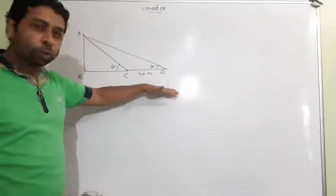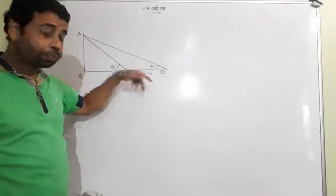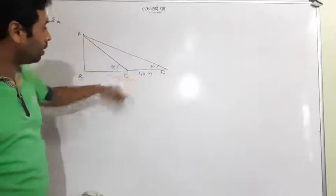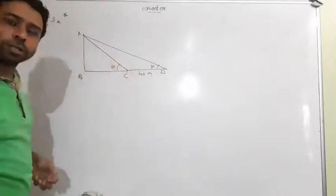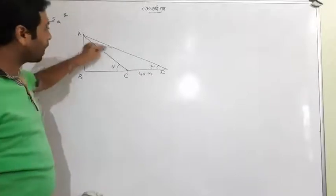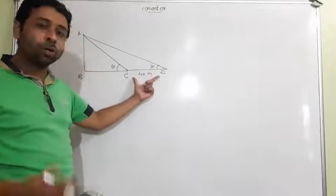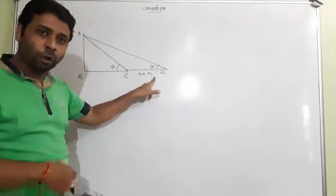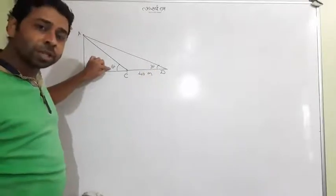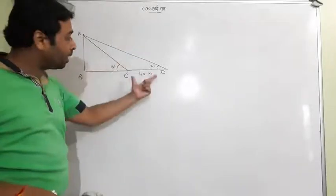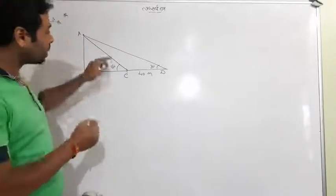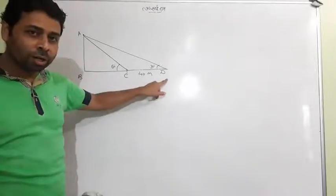These are the two shadows of tower AB at different positions of the Sun. When the Sun is here, the angle is 30 degrees; when the Sun was at a higher position, the angle was 60 degrees. When the Sun sets down, the angle becomes 30 degrees. According to the question, the shadow is 40 meters longer when the Sun's altitude is 30 degrees than when it was 60 degrees.